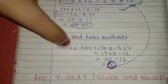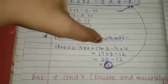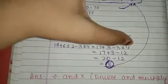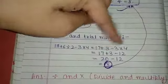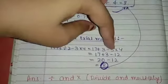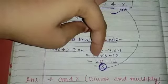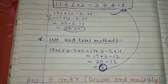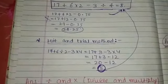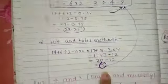Continuing: 6 ÷ 2 = 3, so 17 + 3, then 3 × 4 = 12. So 17 + 3 − 12 = 20 − 12 = 8. This gives us 8, which matches. So by interchanging division and multiplication signs, the equation becomes correct.